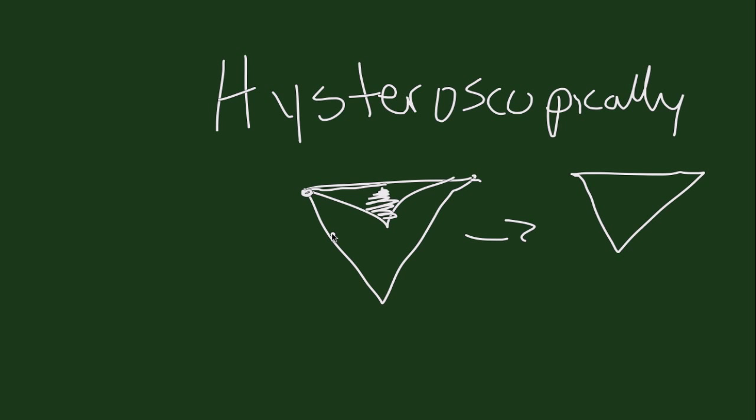With a fibroid, we can do the same thing. If the fibroid's inside the cavity, we can go in with a hysteroscope, resect the fibroid, and remove that fibroid and have a normal cavity. The same thing for a polyp. We take the polyp out the same way. That should restore the uterine cavity to where it could hopefully carry a pregnancy to term at that point.